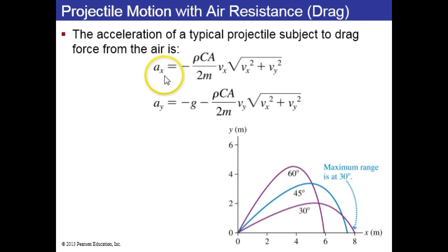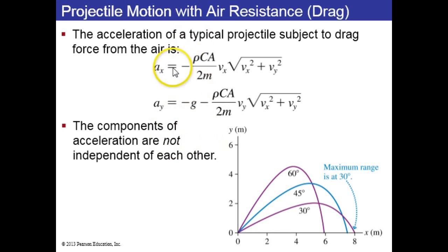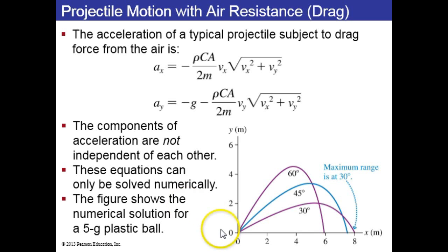If you work out what the acceleration is for a projectile subject to drag, it turns out to be dependent on the velocity. The x component of the acceleration depends on the instantaneous motion, and same with the y component. So these components are not independent of each other, and there's no way to solve it by just writing down an equation. You have to solve these equations numerically. These are the kinds of curves that you get when you do this on a computer. These are the solutions for a 5 gram plastic sphere. Here's maximum range at 30 degrees.